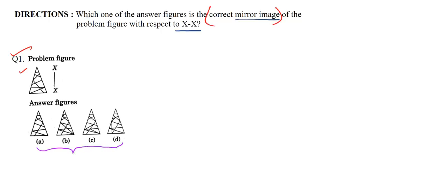First, let us eliminate the wrong options. For the mirror image, consider the left corner of the base — it will come to the right corner of the base when we take the mirror image. So it should come here, and you can see we have only one line coming out of this point. One line coming out from the left side of the base means one line should go from the right base of the triangle.